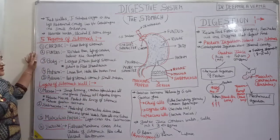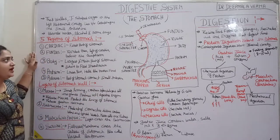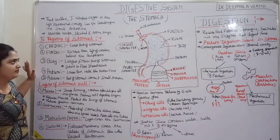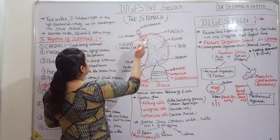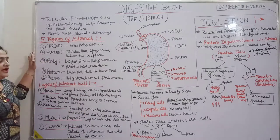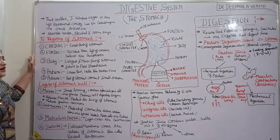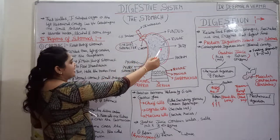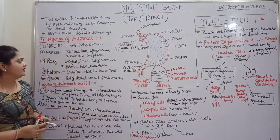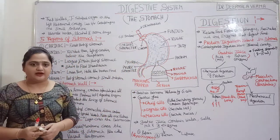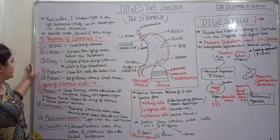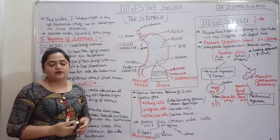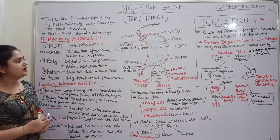Next, fundus. Fundus is the rounded area to the left of the cardia and below the diaphragm. Body — the largest and main part of the stomach — is where food breakdown starts. Antrum is the lower part that holds the breakdown of food.